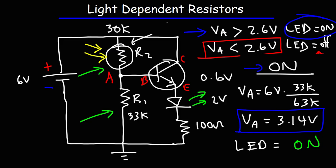Keep in mind that LDR values will vary based on how much light is shining upon it. The light intensity in my living room might be different from yours, so you need to measure your own resistance values and adjust R1 accordingly to make the circuit work. That's it for this video — hopefully you found it educational, and don't forget to check out my other videos in my electronics playlist.